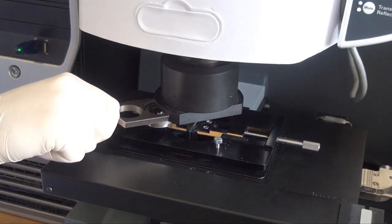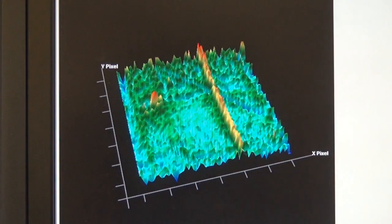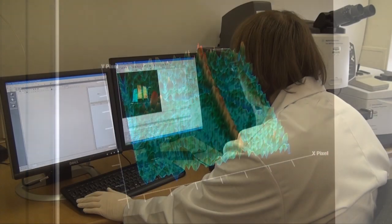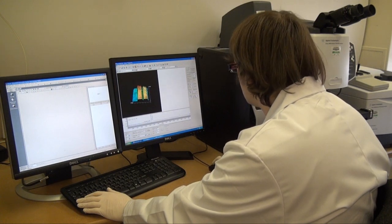The microscope then generates a chemical map of the cross section, which is seen here as a 3D image. The different colors represent different layers of the plastic laminate. The infrared spectrum of each layer can then be compared with library spectra to make an identification.